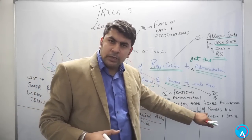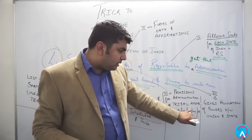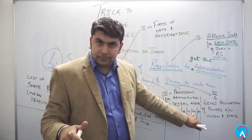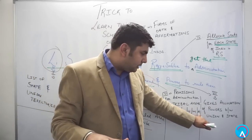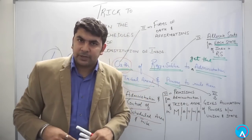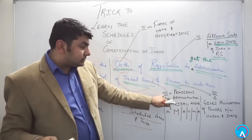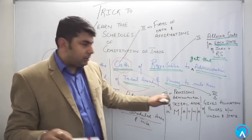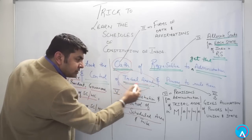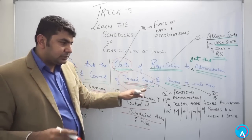Correcting the MATMA acronym — it stands for Meghalaya, Assam, Tripura, Mizoram (not Manipur), and Arunachal Pradesh. So the sixth schedule is related to Provisions for Administration of Tribal Areas in these five northeastern states.